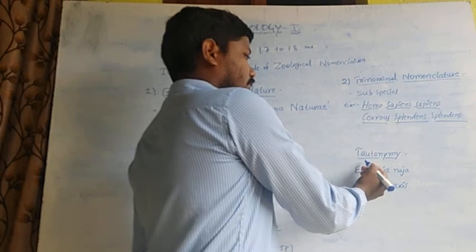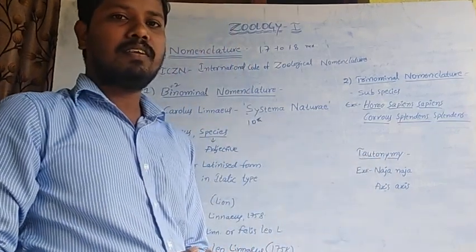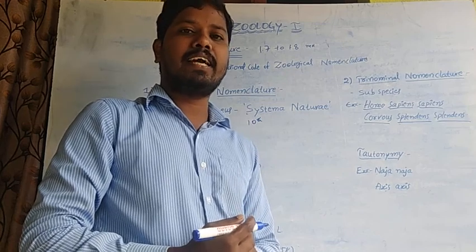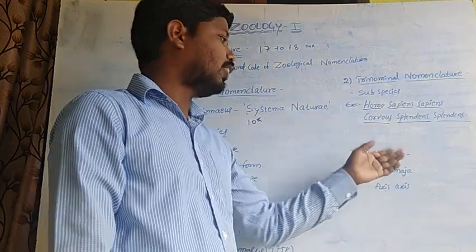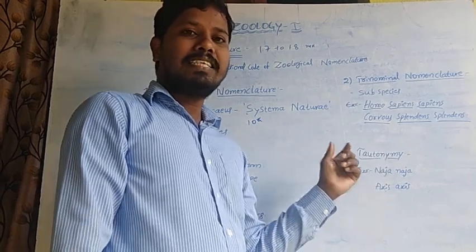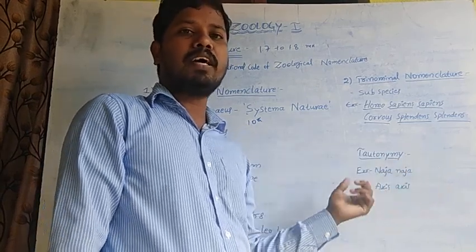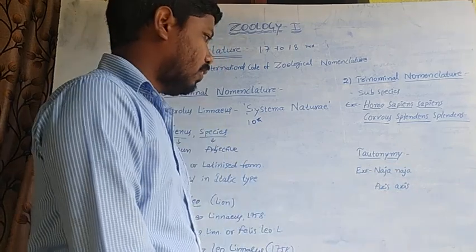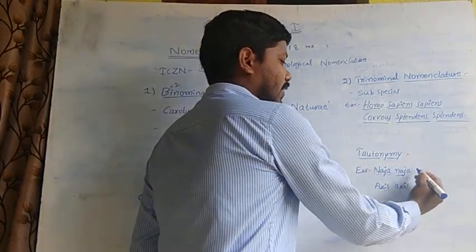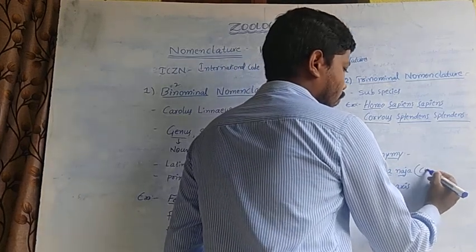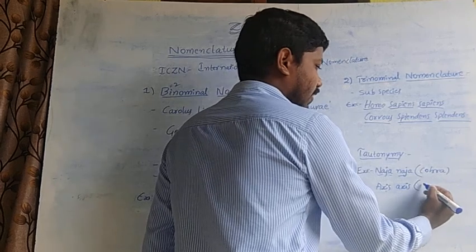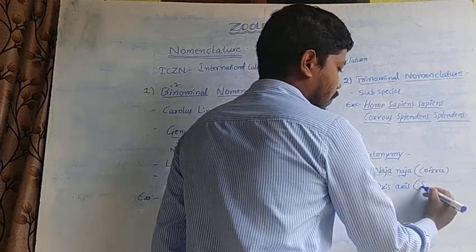Next is tautonymy. The practice of naming in which the generic name and specific name are the same is called tautonymy. For example, Naja naja is the scientific name of cobra, and Axis axis is the scientific name of the spotted deer.